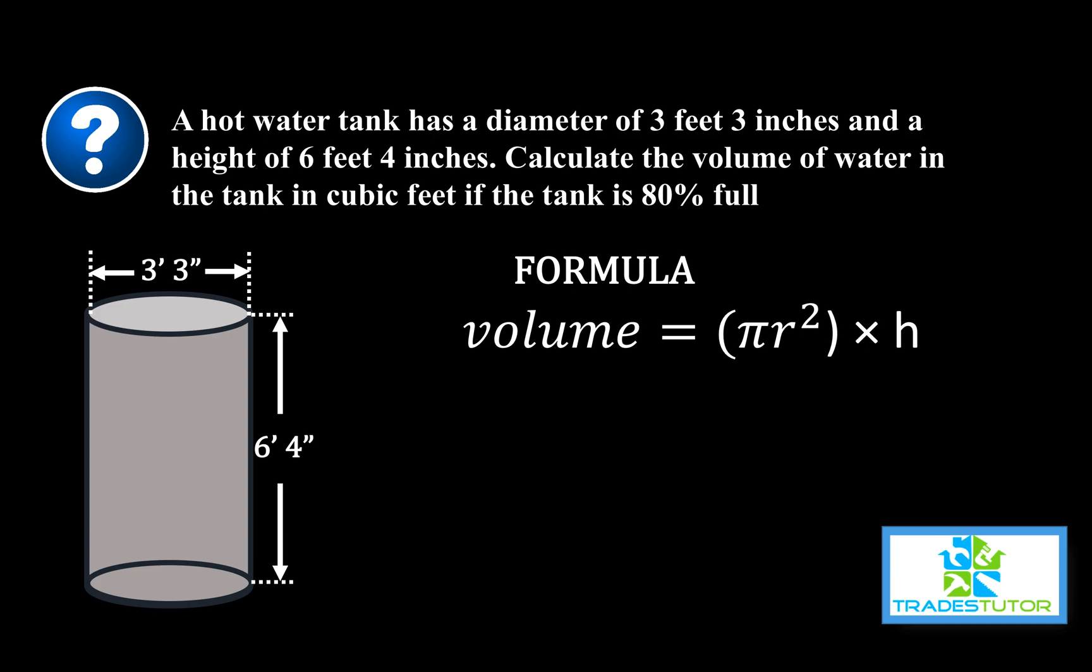If at this point you're thinking, well wait a minute, there's another formula for area that I could possibly use, you're right. We could throw it in this formula. Volume equals d squared times .7854 times height, where the d squared times .7854, that's also the formula for area of a circle. So, either one.